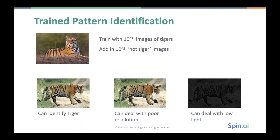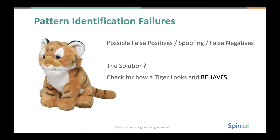Of course, there are a few caveats. You could have false positives, you could be spoofed, and you can have false negatives — if someone sprayed a different color on top of a tiger, you could fool the algorithm. So the solution is not just to check how a tiger looks, but how it behaves. And that's the secret for dealing with ransomware issues, which we'll dig into in a minute.